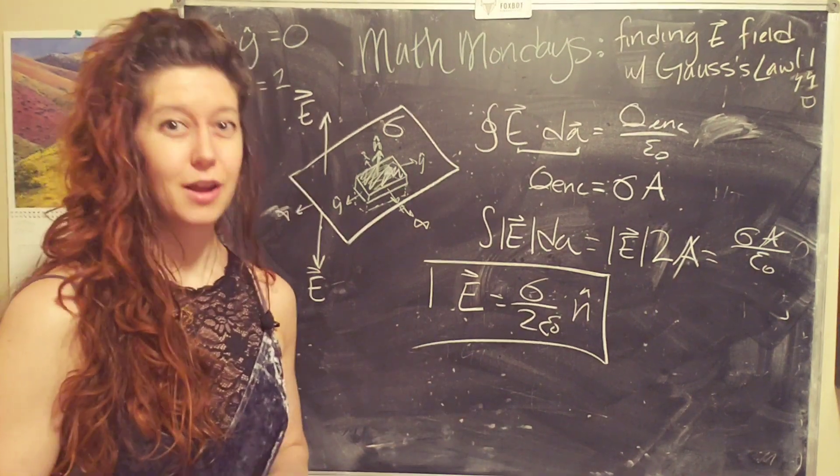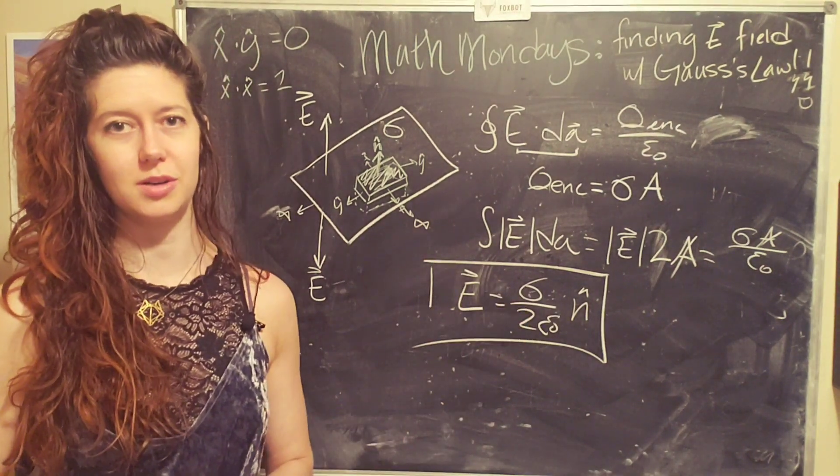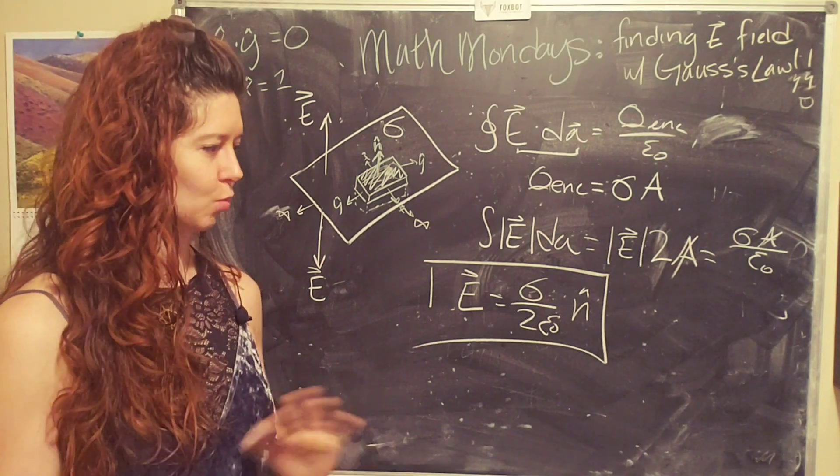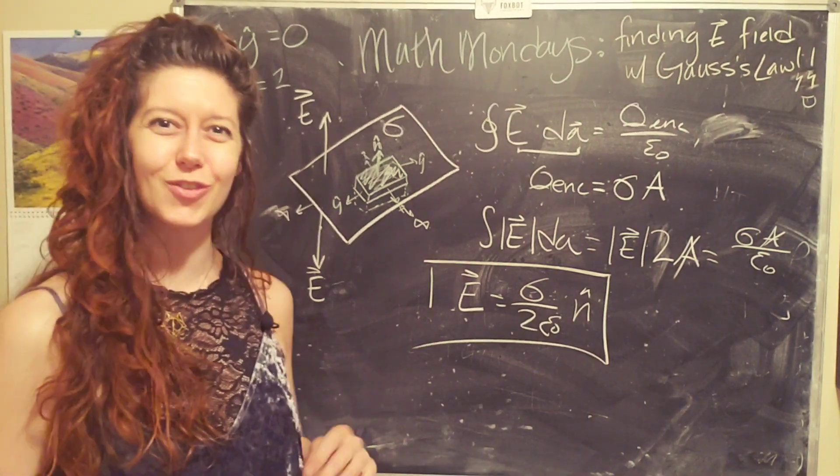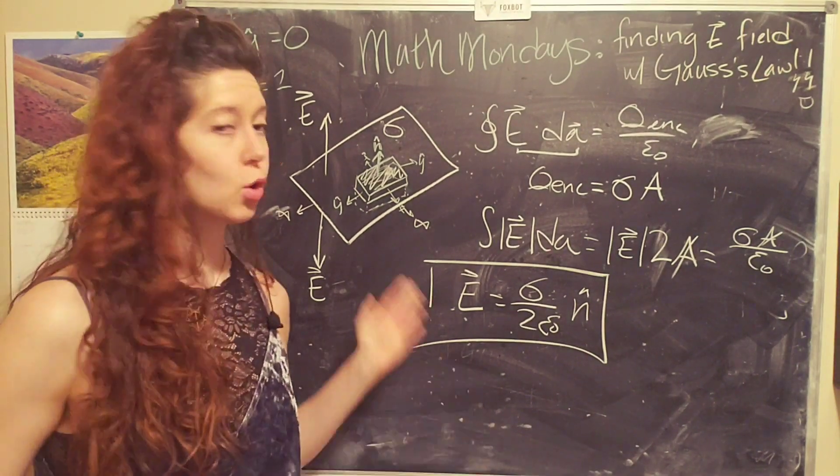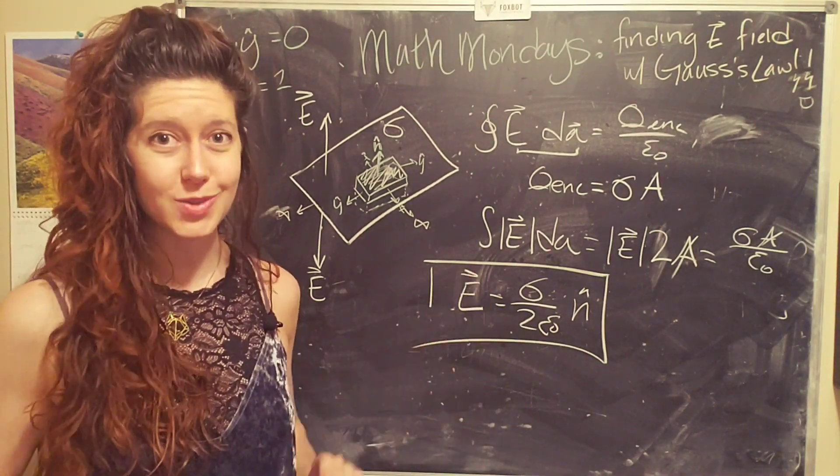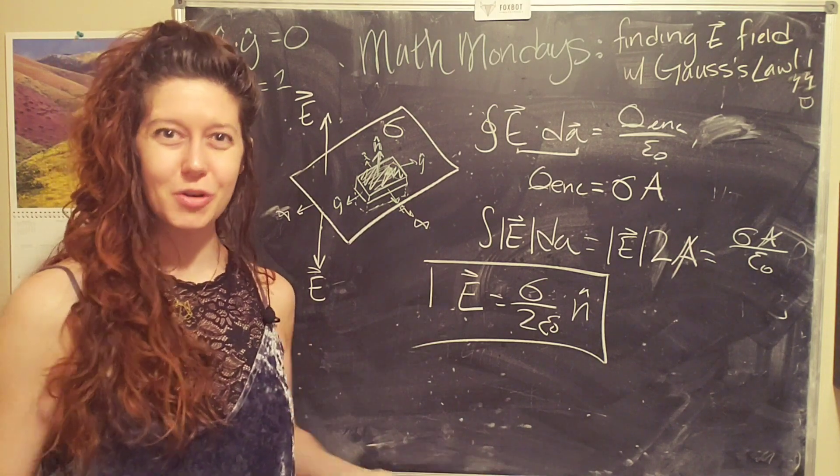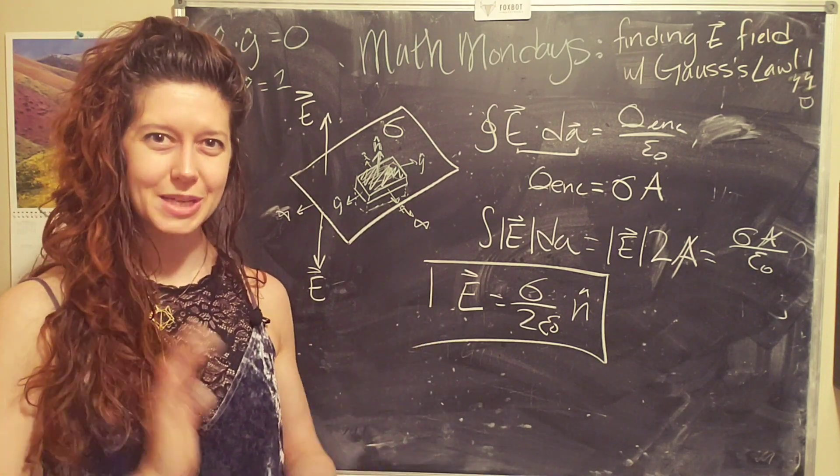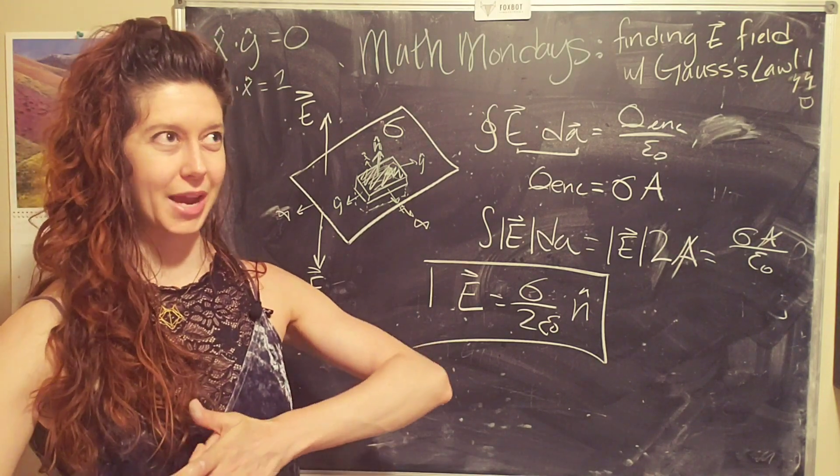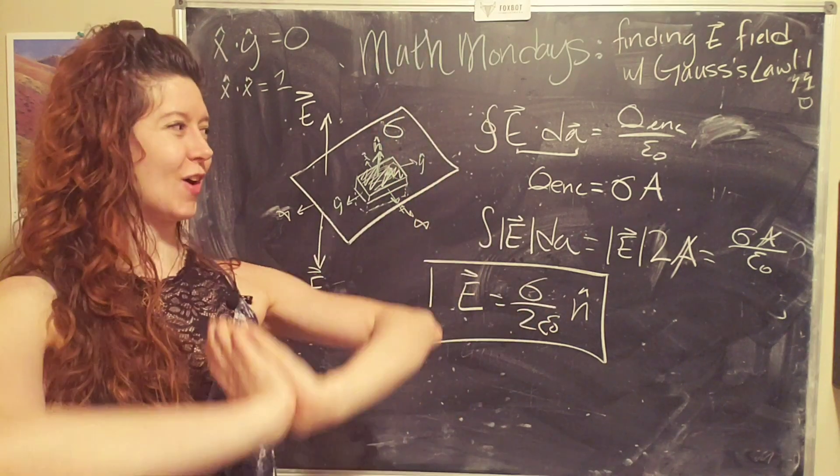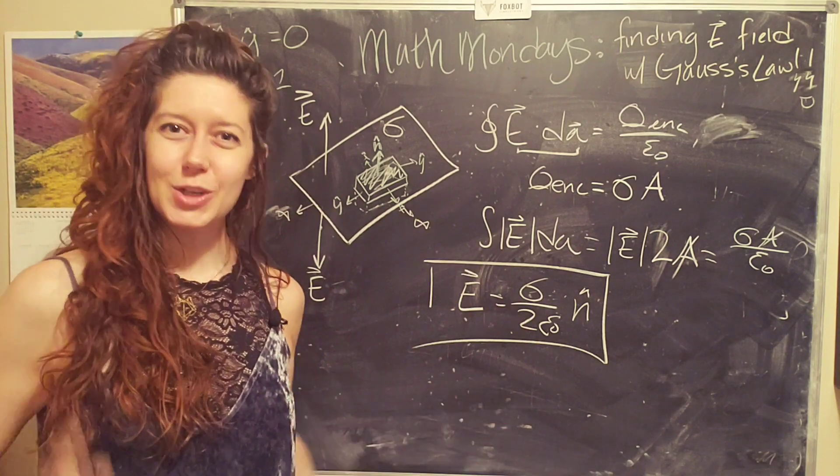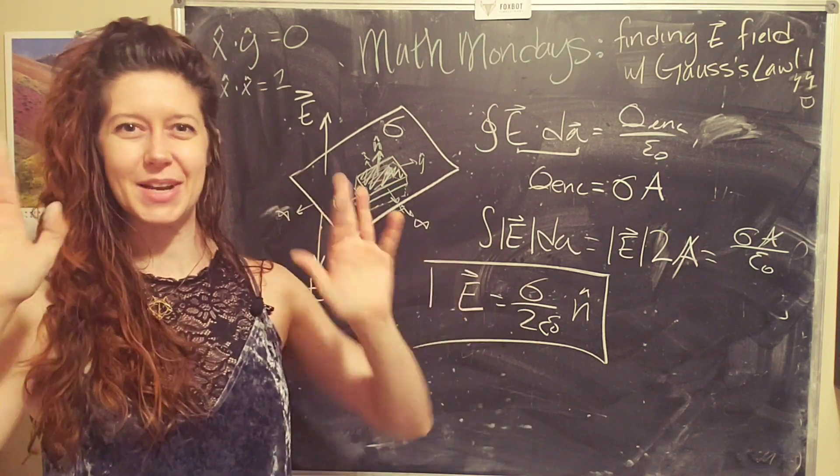Okay. So that's it for the applications of Gauss's law. I skipped the cylindrical one because I wanted to kind of show you two different examples, but leave you something to do for yourself. Let me know if you have any questions on this or Gaussian surfaces. And next we will be moving on to new concepts in electrodynamics like electric potential. Yay. So fun. All right. And with that, thank you for watching and we'll see you next time. Bye.